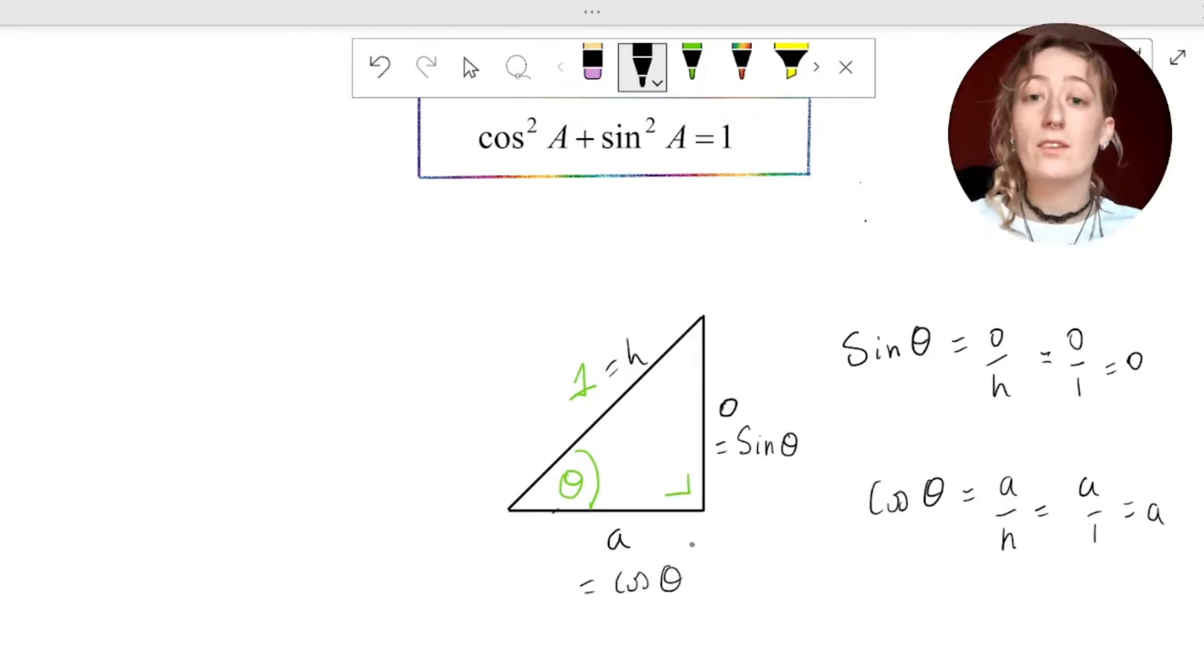So as triangles constructed in this way, where the hypotenuse is equal to 1, then we can write the opposite side purely in terms of sine theta and the adjacent side as cos theta. Now we're ready for our construction.